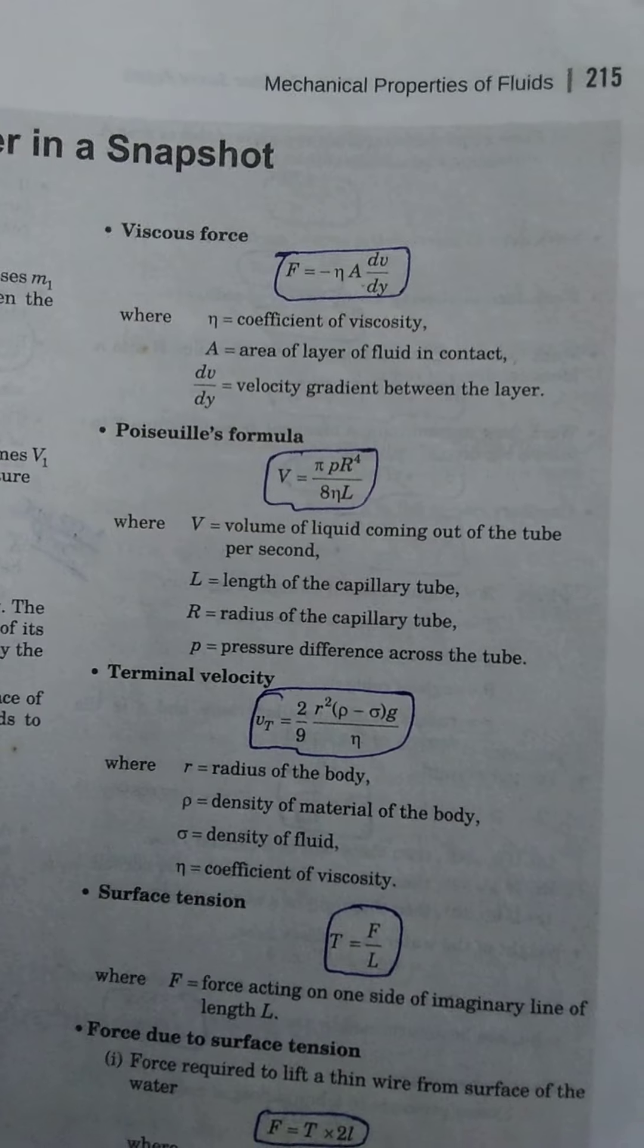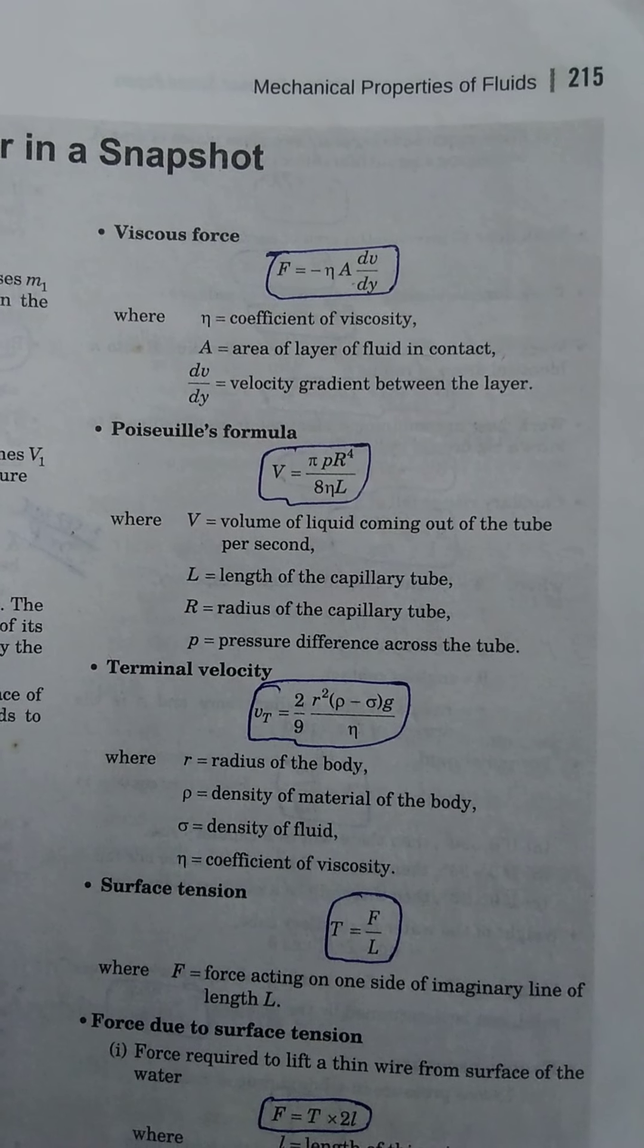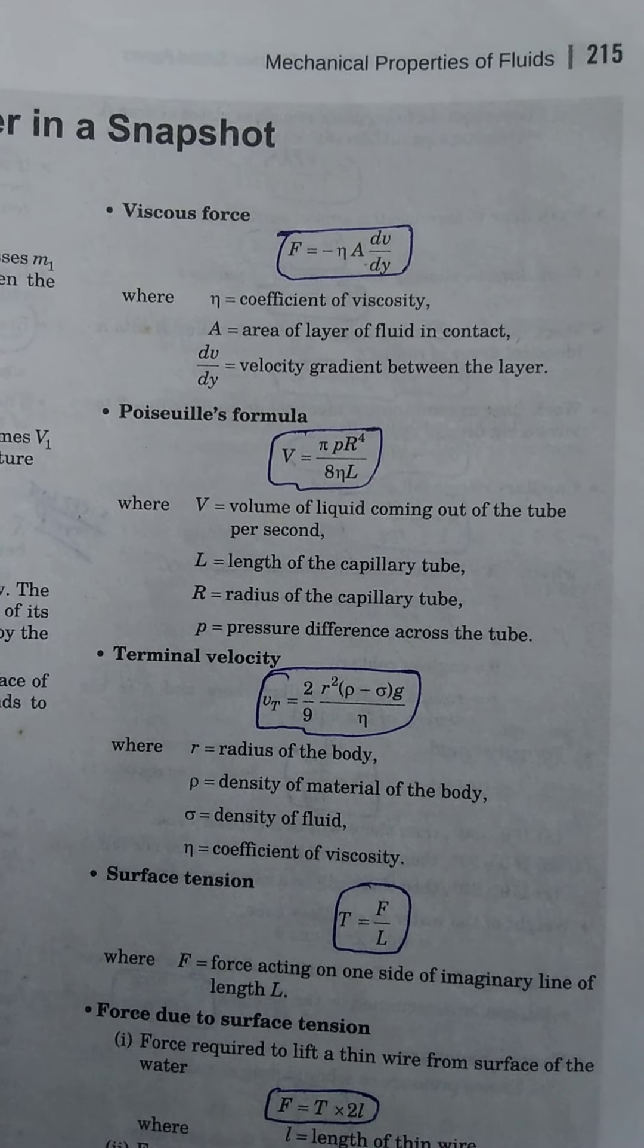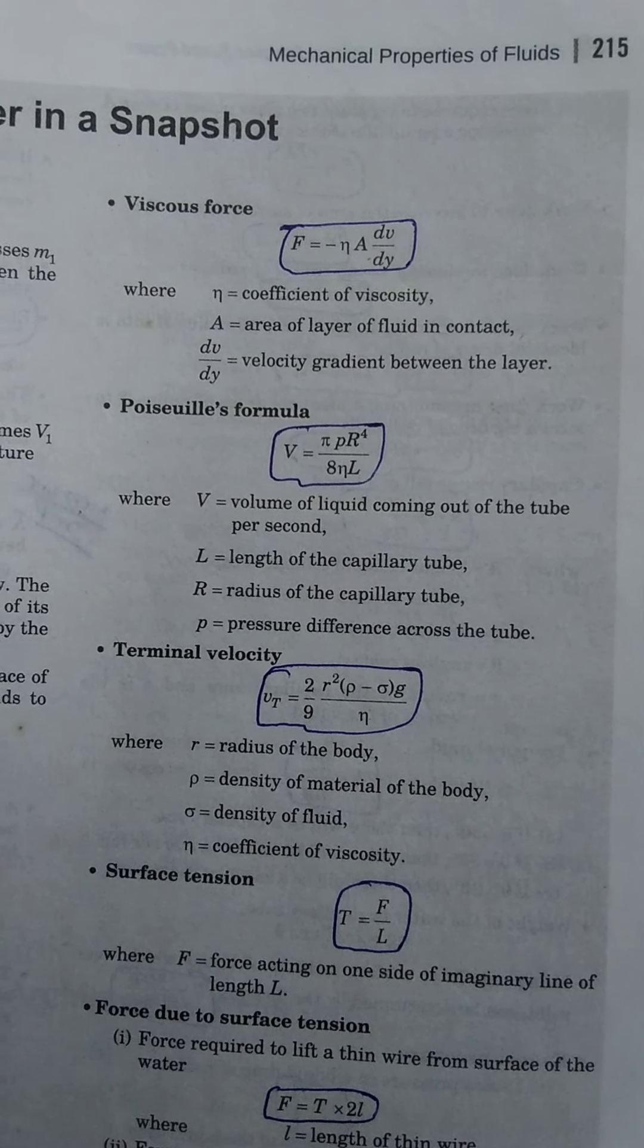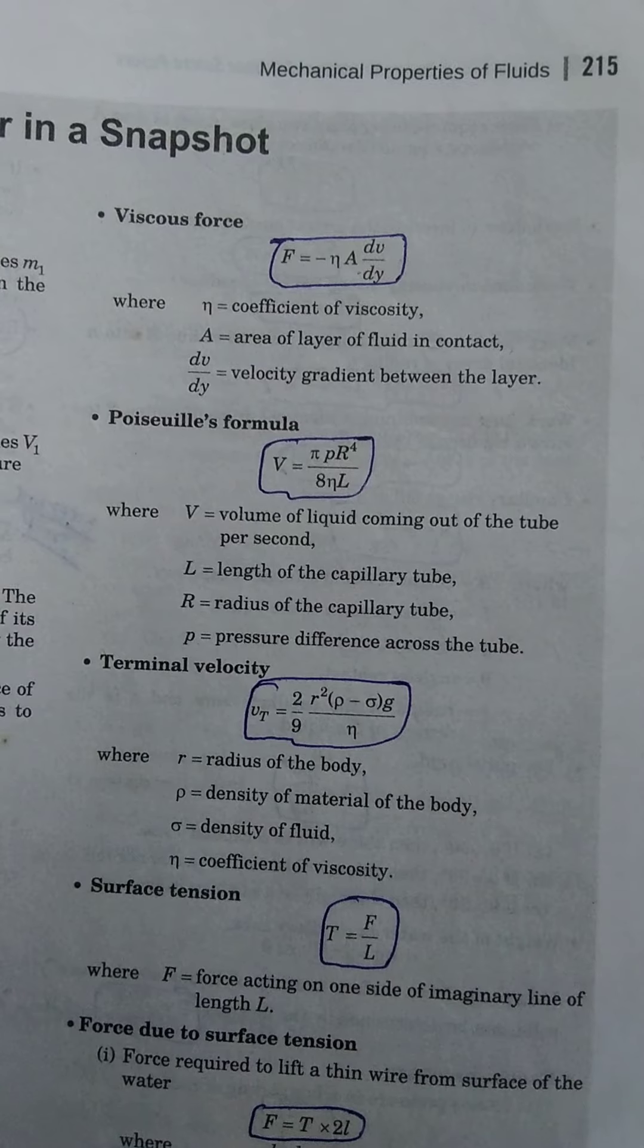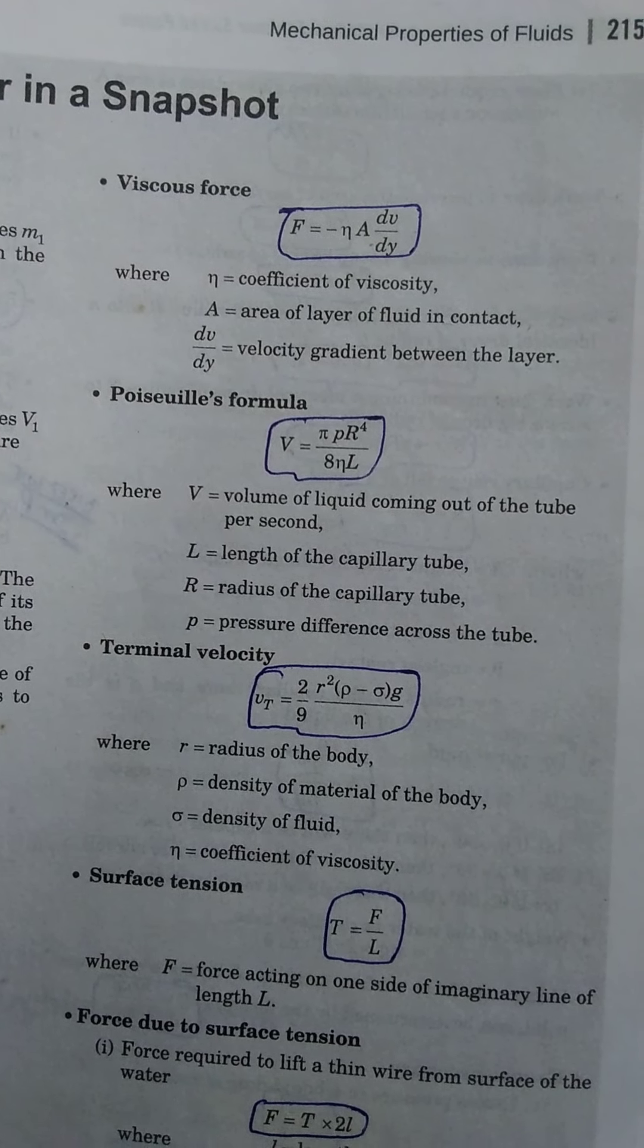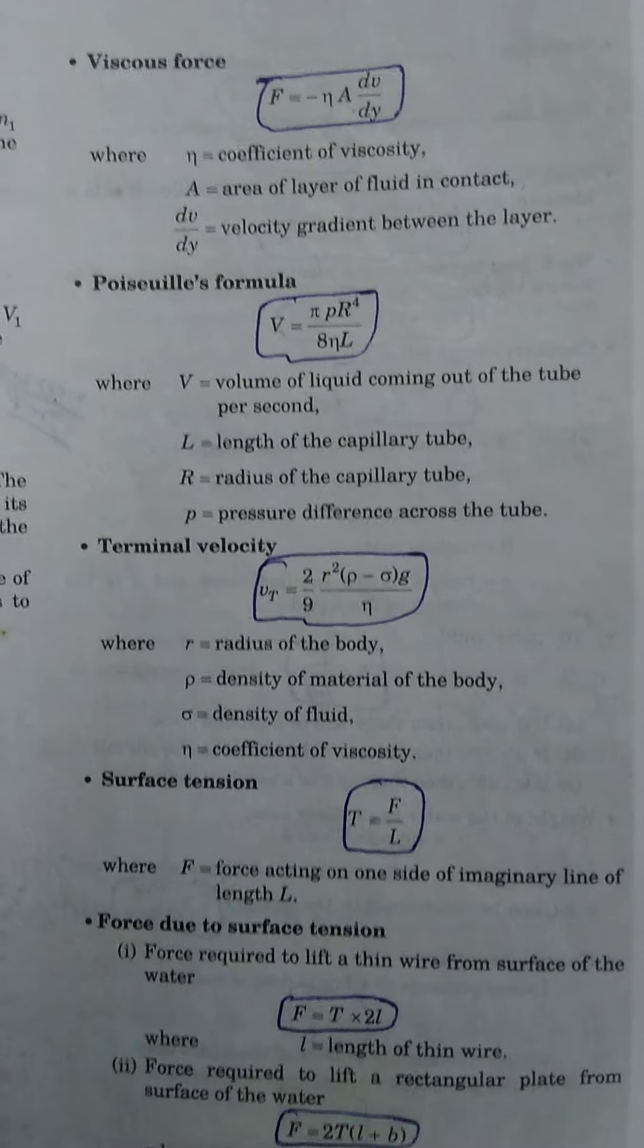Terminal velocity: vₜ equals (2/9) × r²(ρ-σ)g/η, where r is the radius of the body, ρ is the density of the material of the body, σ is the density of the fluid, and η is the coefficient of viscosity.